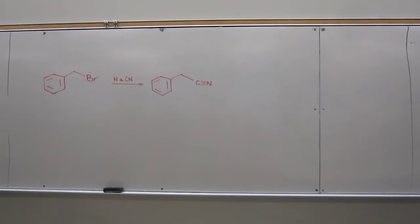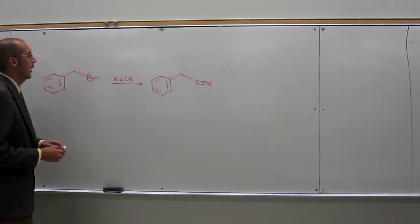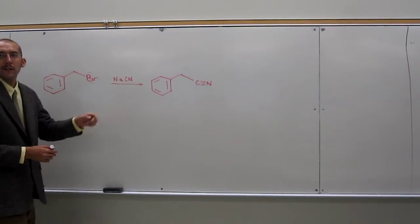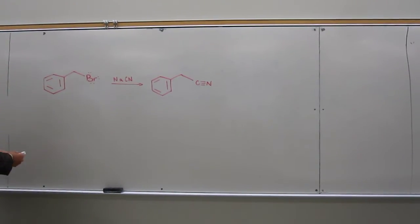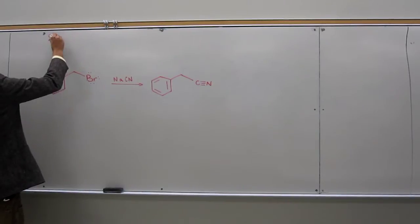Okay, so how do I synthesize nitriles? There's a couple of ways to synthesize them. One you already know from Organic One. It's the synthesis of a nitrile through an SN2 reaction using an alkyl halide and sodium cyanide. So this again is going to be an SN2 reaction.